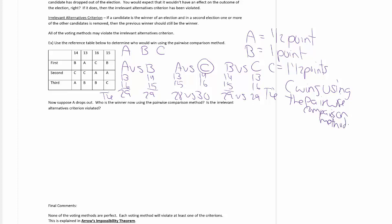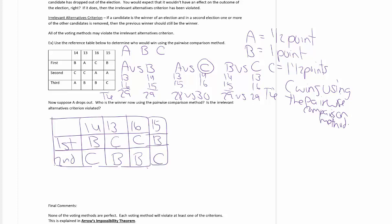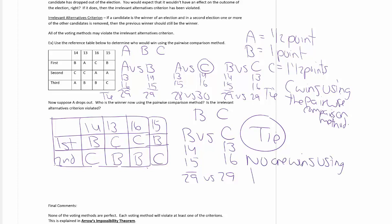Suppose A has dropped out. Who is the winner now using the pairwise comparison method? Is the irrelevant alternatives criterion violated? I'm going to redraw the preference table now without candidate A. Keep in mind the reference table is the same except that we no longer have A. We only have two candidates, B and C. So there's only going to be one comparison to do. B is over C in the first column. C is over B in the second. C over B is on top of the third. And B is over C in the last one. That's 29 versus 29. It is a tie here. So no one wins using the pairwise comparison method.